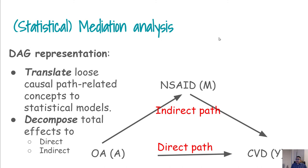That helps us translate the relationship of interest into statistical model translations. Using statistical mediation analysis, what we are trying to do here is we are trying to get direct effect from the direct path and indirect effect from the indirect path.